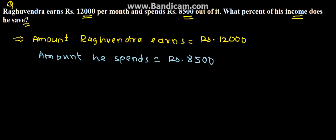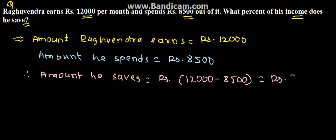So now from this we can derive the amount he saves. The amount he saves will be the amount he earns minus the amount he spends. So this is rupees 12,000 minus 8,500, which comes to rupees 3,500.